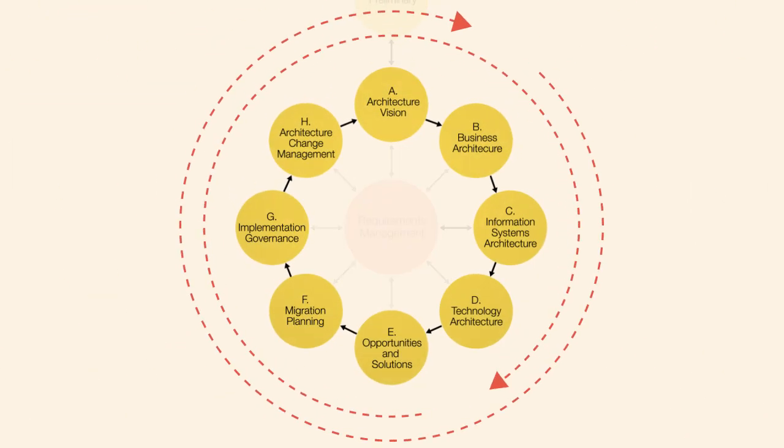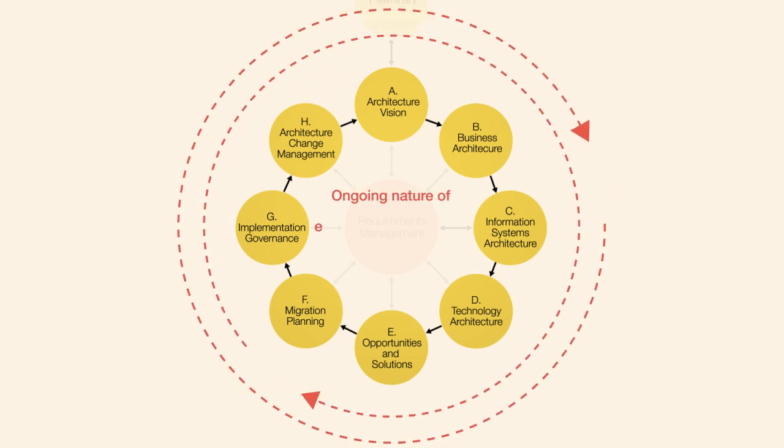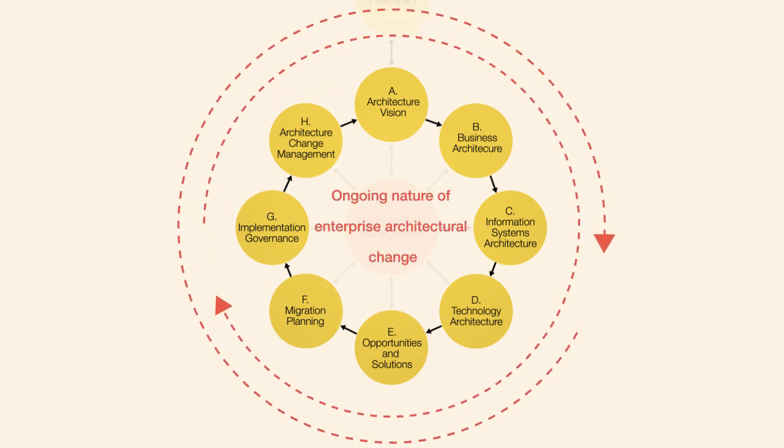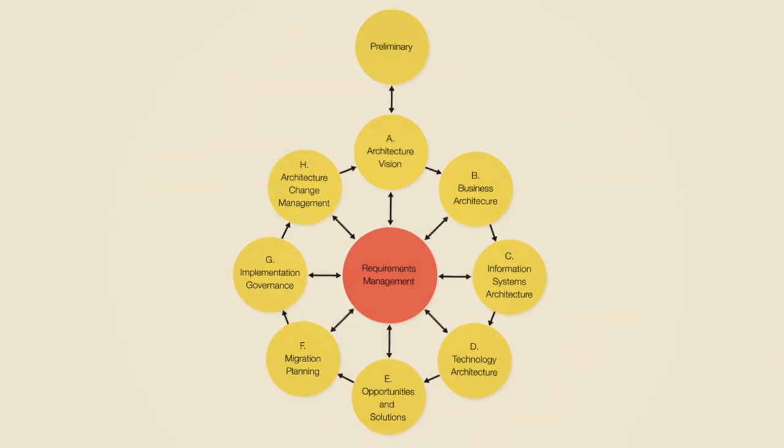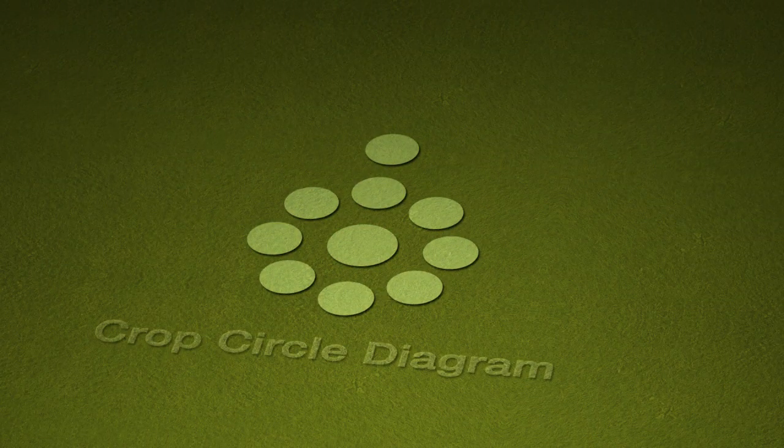The rest of the phases are arranged in the development cycle to show the ongoing nature of enterprise architectural change. Incidentally, the ADM diagram is often called the crop circle diagram because of its shape.